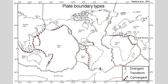Here's a map of the different kinds of boundaries between the plates: the divergent margin where things are pulling apart, the transform margin where things are sliding horizontally past each other — such as the San Andreas system in California — and the convergent margin, which is what you have in the trench system mostly around the Pacific.